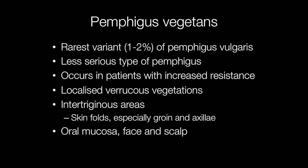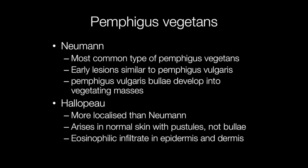It can also affect the face and scalp. There are two subtypes of pemphigus vegetans. The most common type is the Newman type, which begins and ends as pemphigus vulgaris — the early lesions are similar to pemphigus vulgaris, but the bullae develop into vegetating masses.